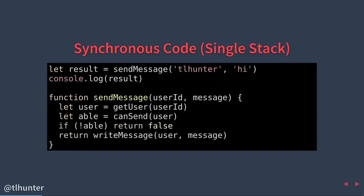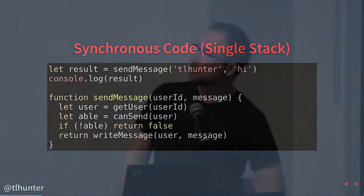Let's step through this code. We want to execute a function called sendMessage. It accepts two arguments: the first is the user ID we want to send a message to, and the second is the message we want to send to that user. Once we send the message, we want to find the result — did the message send successfully or not?